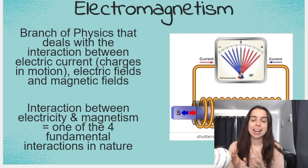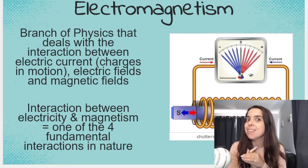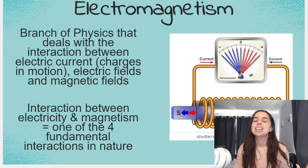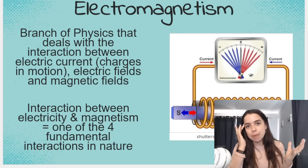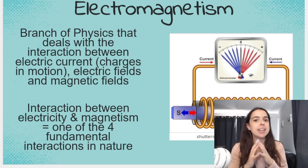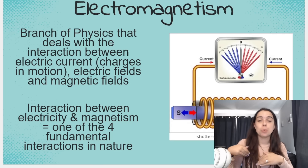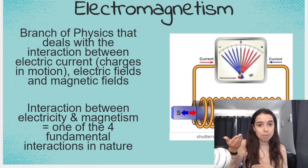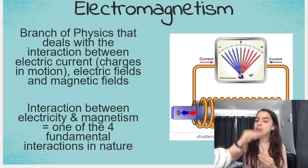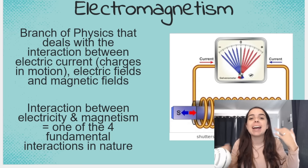Electromagnetism — the name tells you almost everything you need to know about the topic. Basically, the name tells us that we are dealing with a branch of physics that deals with the interaction between electric fields — that's where the 'electro' comes from — and electric current, so the movement of charges. And magnetism — magnetic fields.